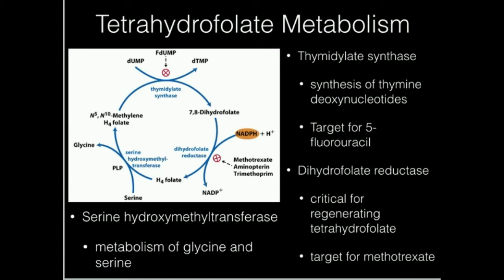There is a drug called 5-fluorouracil. 5-fluorouracil is a pro-drug that gets converted through a series of enzymes to fluorodeoxy-UMP. Fluorodeoxy-UMP is a suicide inhibitor — an irreversible inhibitor — of thymidylate synthase. It completely inactivates that enzyme, thereby shutting down thymine synthesis and preventing cancer cells from replicating.